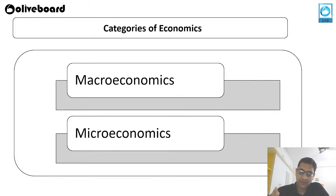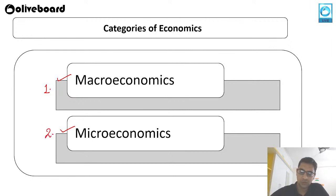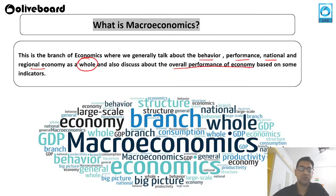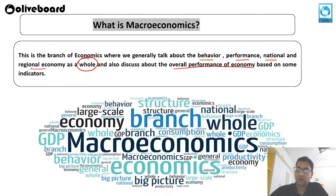Now, how do we categorize economics? We have two categories: first is macroeconomics and second is microeconomics. In macroeconomics, it is a branch of economics that normally talks about the behavior and performance of the national and regional economy as a whole, and discusses the overall performance of the economy. In macroeconomics, we are talking in larger terms — how this country is growing, what the employment ratio is, and related issues.